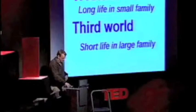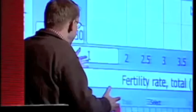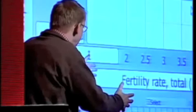And what do you mean with Western world? I said, well, that's long life and small family and third world is short life and large family. So, this is what I could display here. I put fertility rate here, number of children per woman, one, two, three, four, up to about eight children per woman.